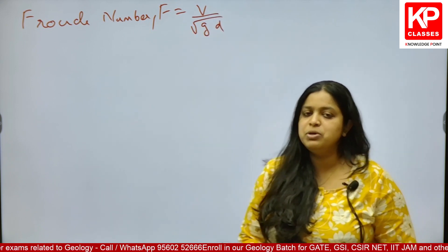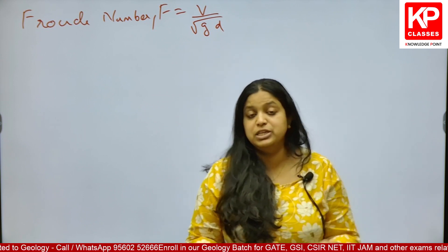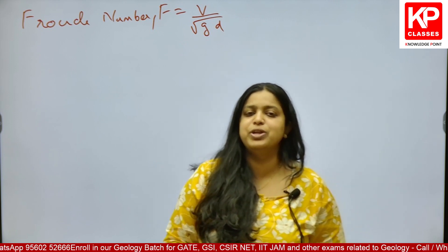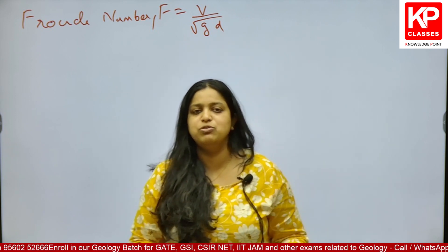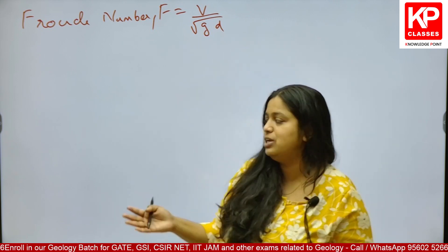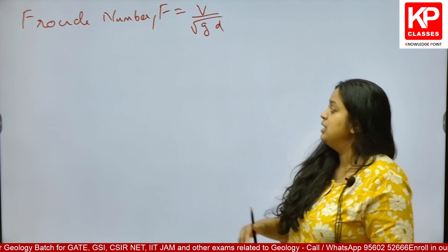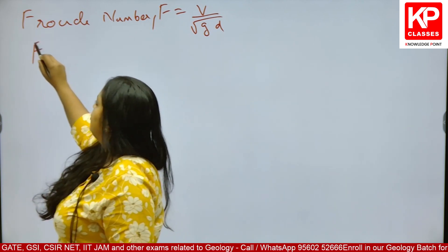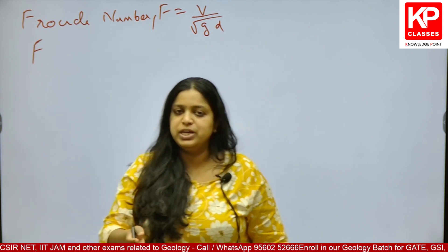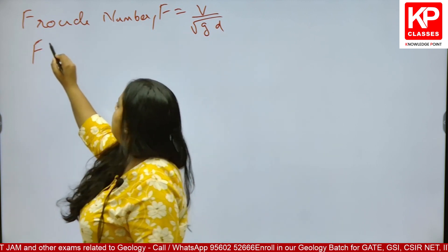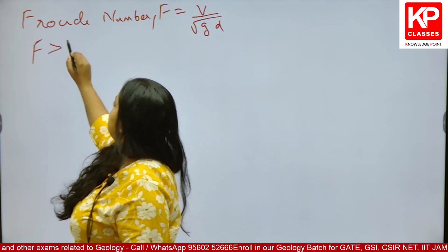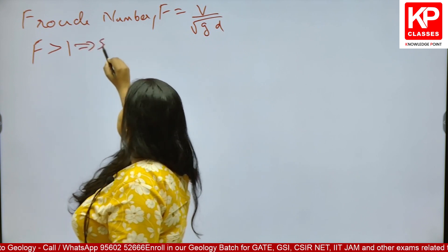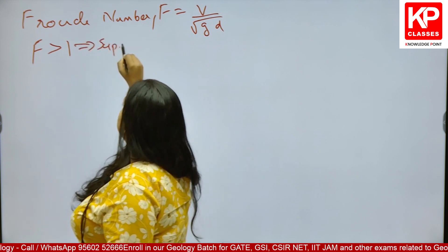Froude number actually gives us an idea about inertial forces versus gravitational forces, or it gives you an idea about the velocity of the channel and depth of the channel and their relationship with each other. According to the Froude number value for a given channel, if Froude number is coming as more than 1, the channel flow condition will be called as supercritical flow.